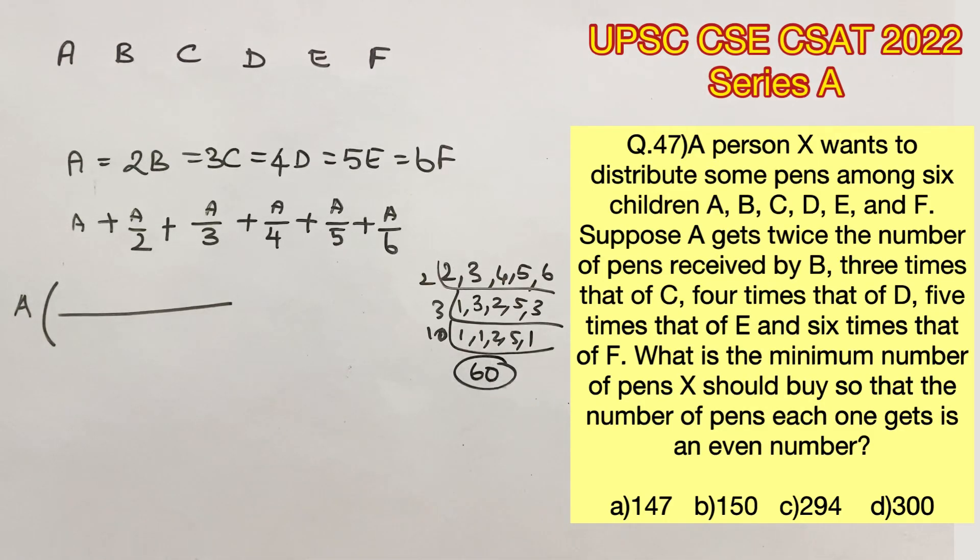Let's also take an LCM for all the denominators. We will get an LCM of 60. Let's put it here. I hope you all know how to solve LCM and fractions. The first term will become 60 since the denominator contains 1. The second term will become 30 since the denominator contains 2. Third term will become 20. Fourth term will become 15. Fifth term will become 12. And sixth term will become 10. Adding these up, we will get 147 divided by 60.